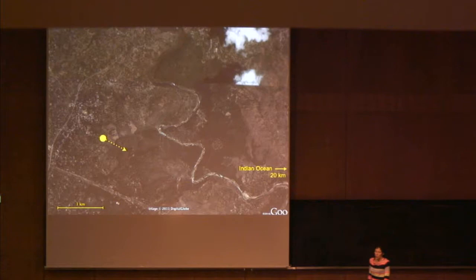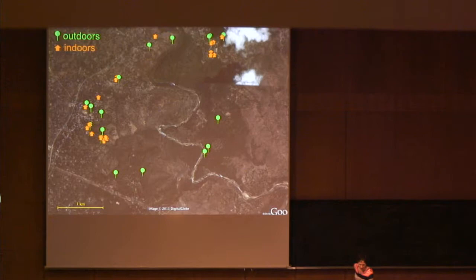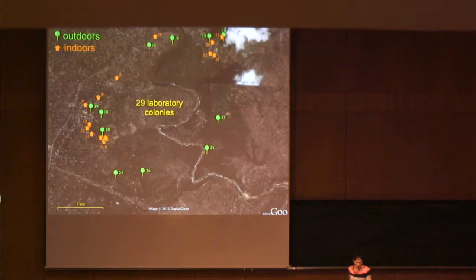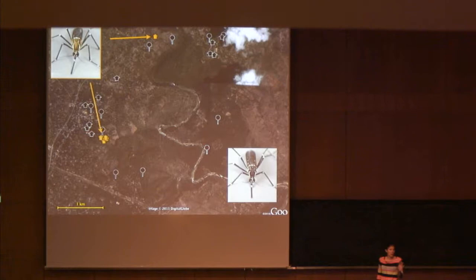We decided to collect mosquitoes both indoors and outdoors, and these icons show all the locations where we found this particular species of mosquito — green tree icons for outdoors and house icons for indoors. With these collections, I returned to New York and established almost 30 laboratory colonies, where each colony descended from a small number of males or females collected in exactly the same house or tree hole. It soon became clear that while the vast majority of collections yielded black mosquitoes, individuals collected from a small group of homes yielded brown mosquitoes.